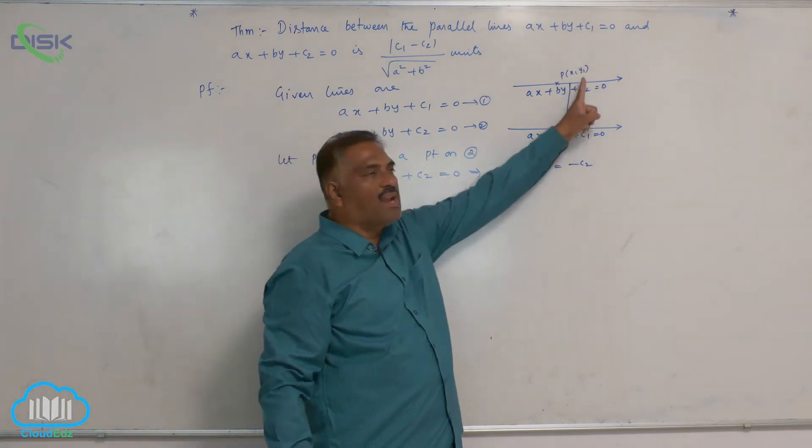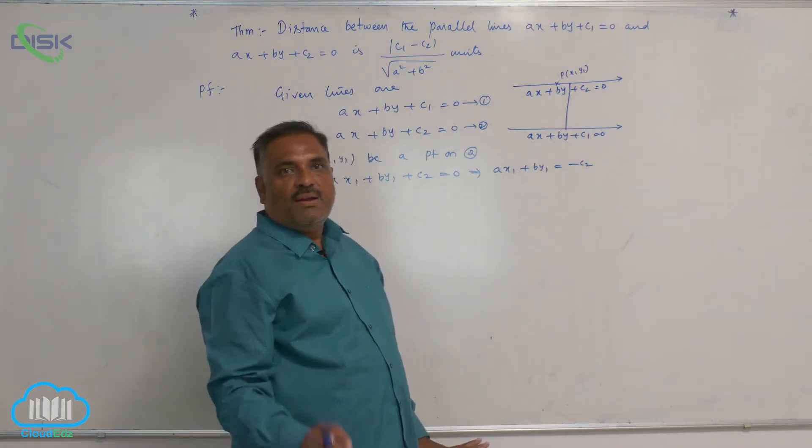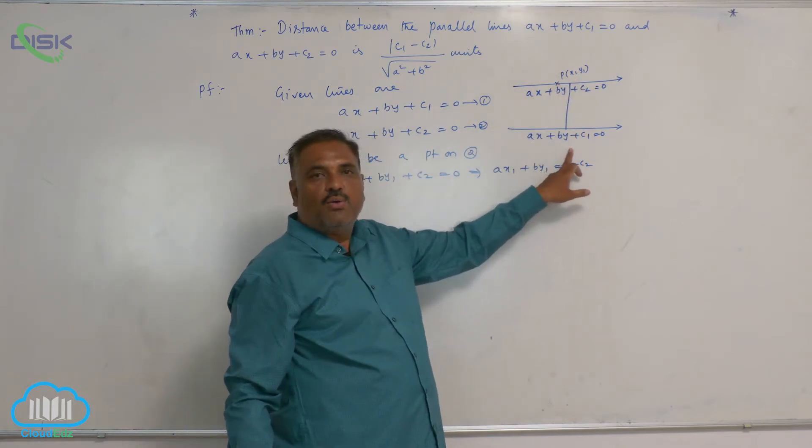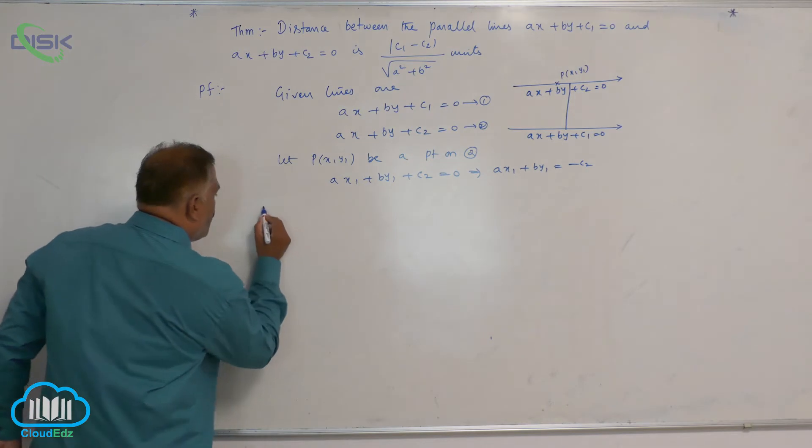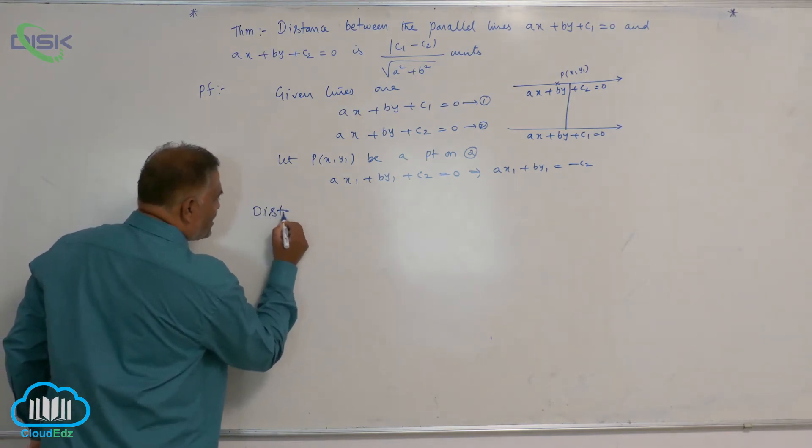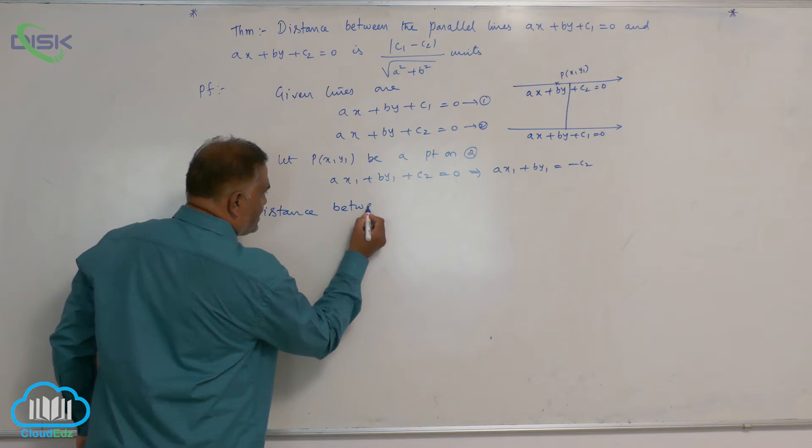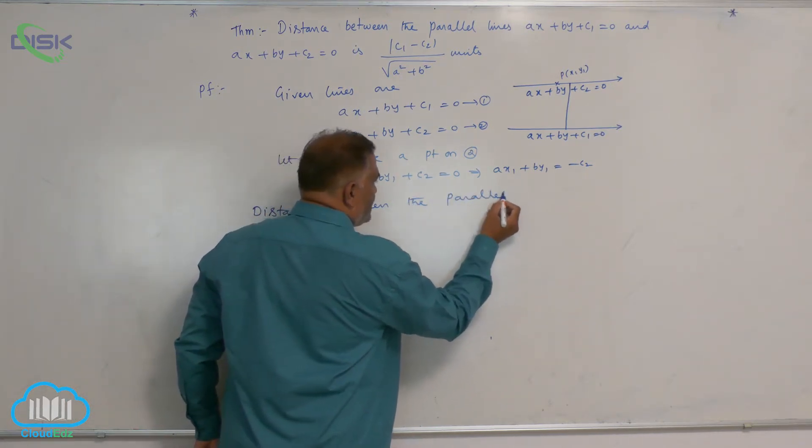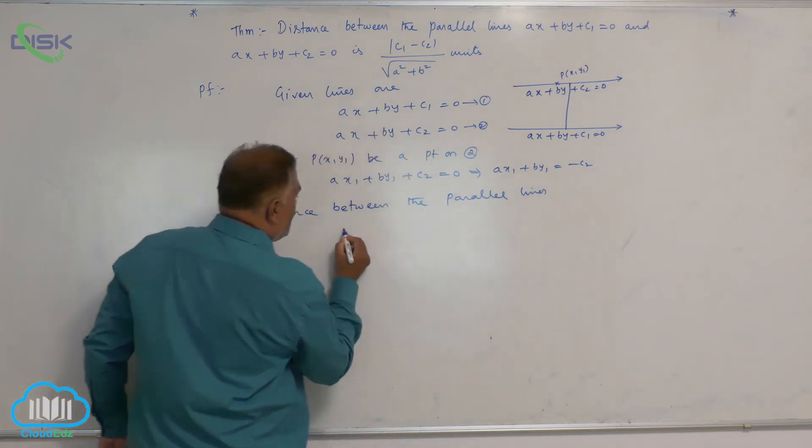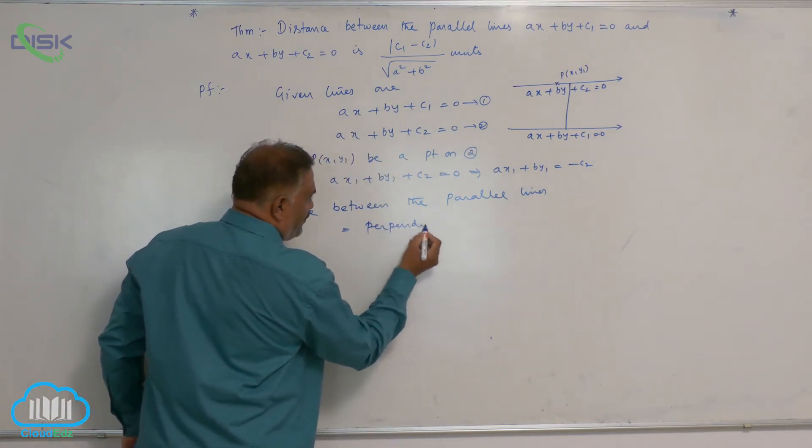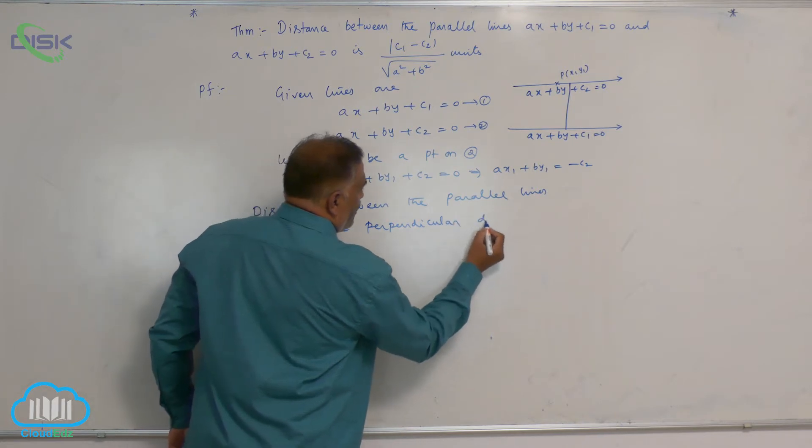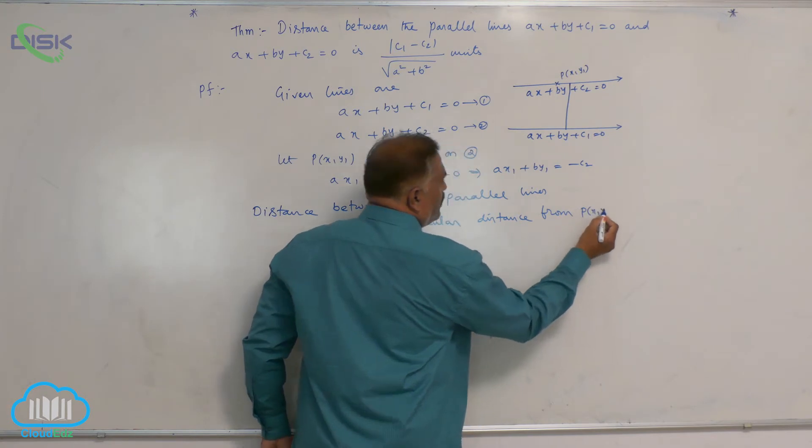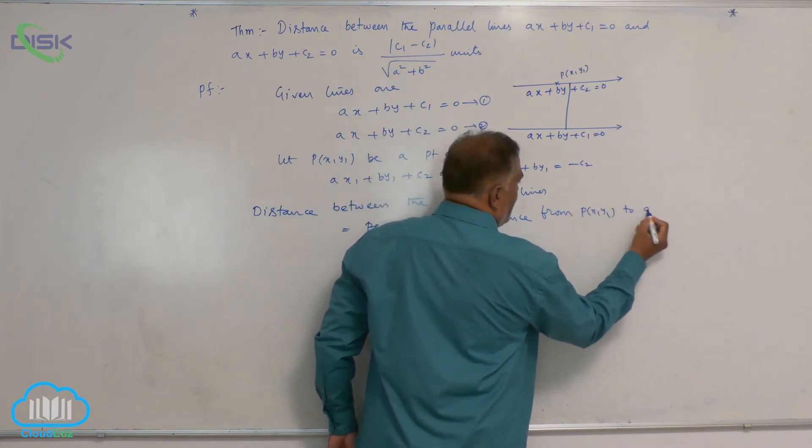Distance between the two parallel lines is same as perpendicular distance from the point PX1 Y1 to the line number 1. So we can write distance between the parallel lines is equal to perpendicular distance from PX1 Y1 to line 1 AX plus BY plus C1 is equal to 0. Already we know the perpendicular distance formula.